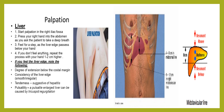A tender liver edge is suggestive of hepatitis or may be due to congestive heart failure. A pulsatile liver may be caused by tricuspid regurgitation or other cardiac problems. Measure the liver size below the costal margin and the total vertical liver span — this is the length of the liver below the right costal margin on the midclavicular line. Measure the total liver span by percussing from above downward from the lung until dullness of the liver is reached, mark it, then percuss from below upward on the midclavicular line until the liver edge is reached, mark it, and measure the distance between the two points.